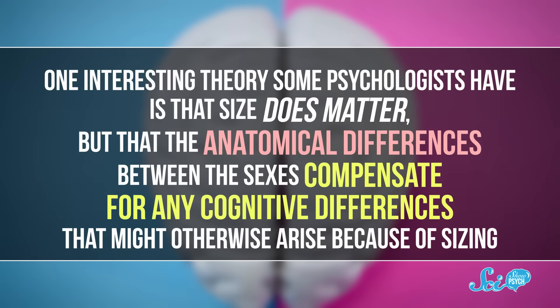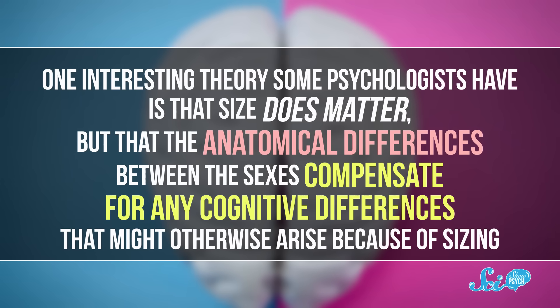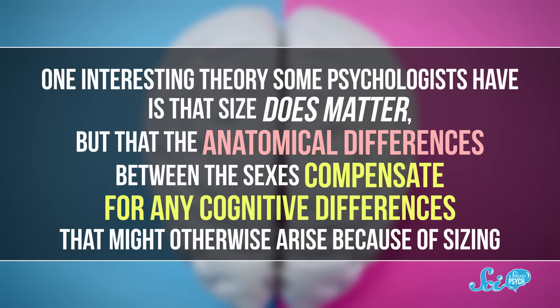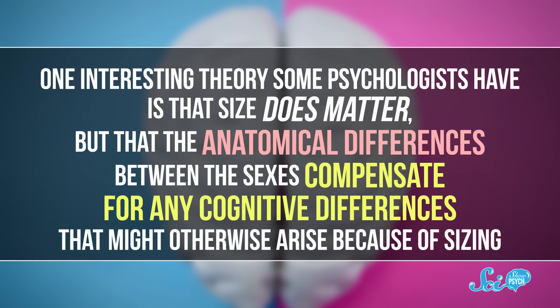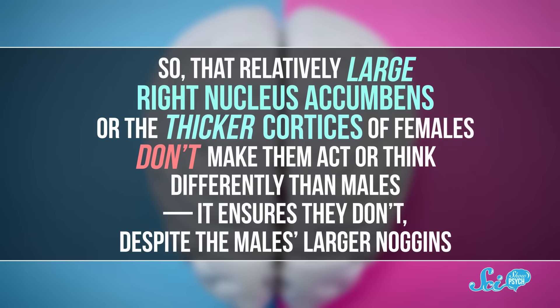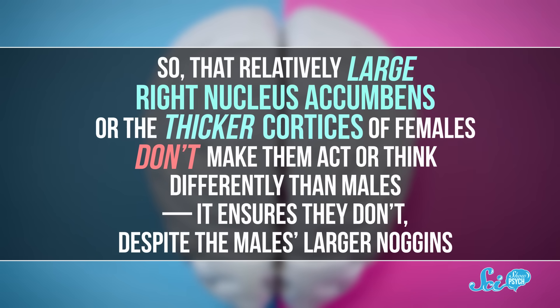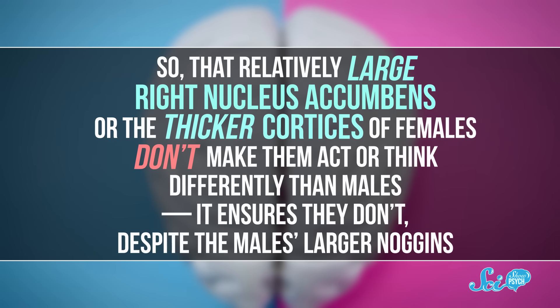But there's also an assumption underlying all this debate, which is rarely questioned, that these differences correlate to sex-specific differences in cognition or behavior. The thing is, there's not much evidence that that's true. And there might be a reason for that. One interesting theory some psychologists have is that size does matter, but that the anatomical differences between the sexes compensate for any cognitive differences that might otherwise arise because of sizing. So that relatively large right nucleus accumbens, or the thicker cortices of females, don't make them act or think differently than males. It ensures they don't, despite the male's larger noggins.